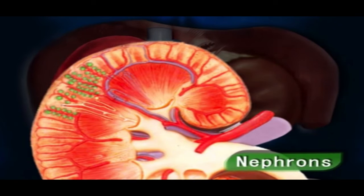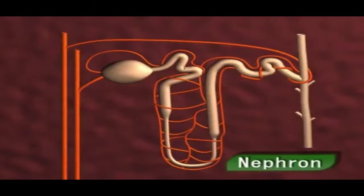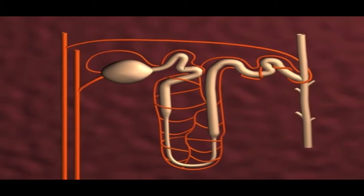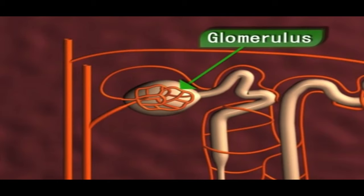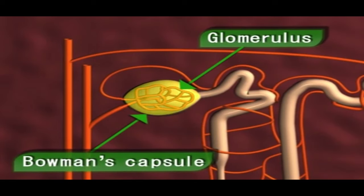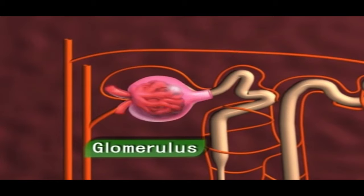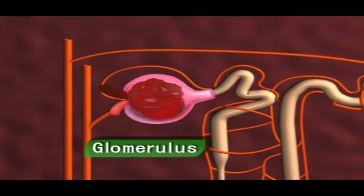Each kidney consists of millions of nephrons. The blood is filtered by the nephrons using a blob-like structure called glomerulus and a long straw-like string called tubule. The glomerulus works like a sieve, allowing only certain ingredients like vitamins and minerals to pass through the tubule. Then the kidney decides whether the body requires any of these ingredients, and they are reabsorbed in the required quantities to be circulated again in the blood.